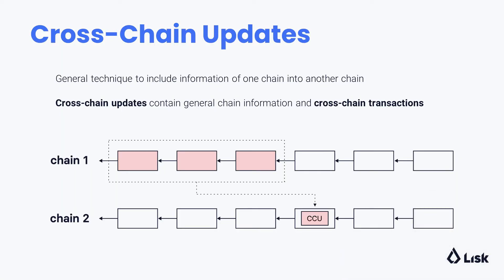The general technique that we use to achieve interoperability is cross-chain updates. This is a general technique that allows us to include information from one chain into another chain. These cross-chain updates will contain some general chain information and the cross-chain transactions. Information and cross-chain transactions from finalized blocks are packed together in a single cross-chain update that is then included on the other chain as a special transaction and processed as part of normal transaction processing.